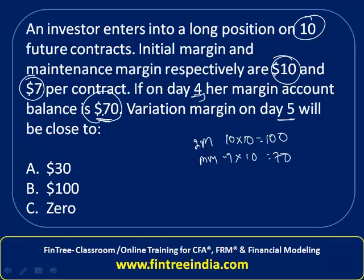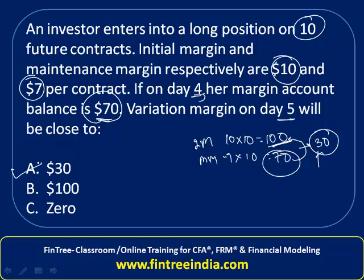On day 4, the trader has reached the maintenance margin limit of $70. Therefore, the trader would be required to take the margin balance back to the initial margin level, which means depositing an additional $30. This $30 is the variation margin, so the answer is A.